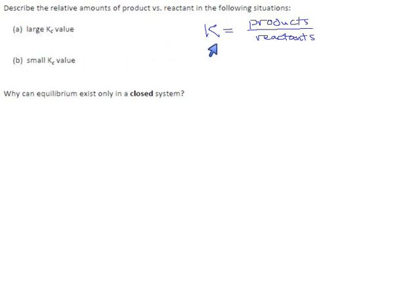If K is large, and by large we mean bigger than 1, you can have Ks that are like 50 or 1,000 or 1,000,000. What that means is that the product concentrations are very big and/or the reactant concentrations are very small. So a large K means the products exist in higher concentrations than the reactants.